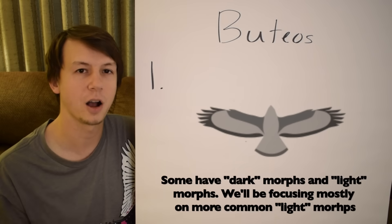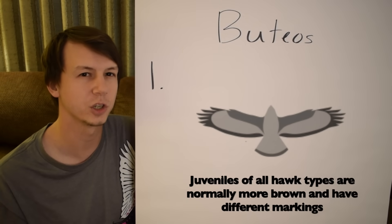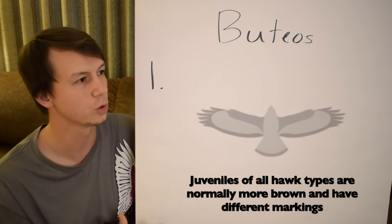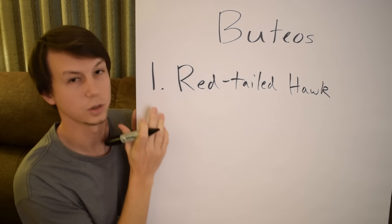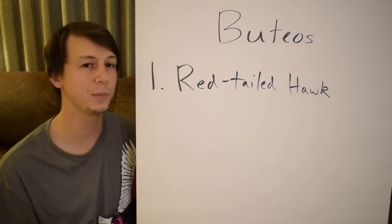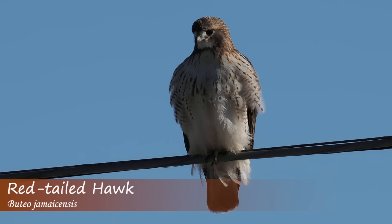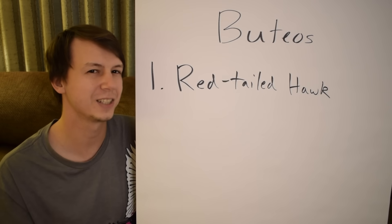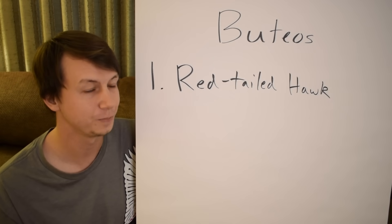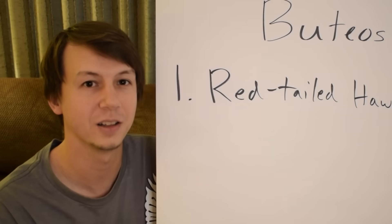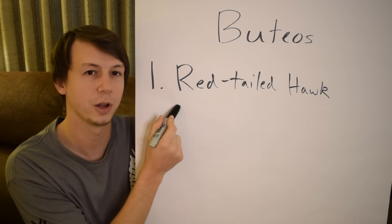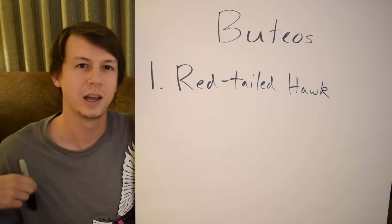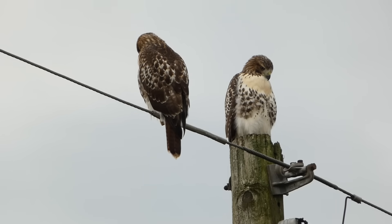Let's focus on our hawks. Starting with the buteos — your most common hawk in most areas is the red-tailed hawk. They can be tricky because there are so many different subspecies. Some main features: obviously the red tail — adults will have pretty obvious red in the feathers depending on subspecies. They also tend to have something called a belly band, which is a band of brown feathers around the stomach. And they're kind of chunky, kind of beefy.